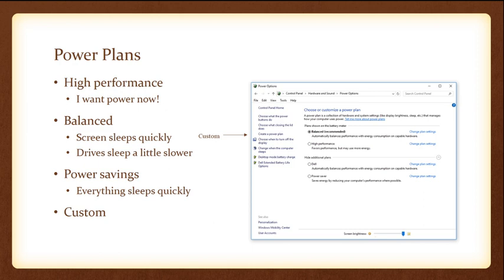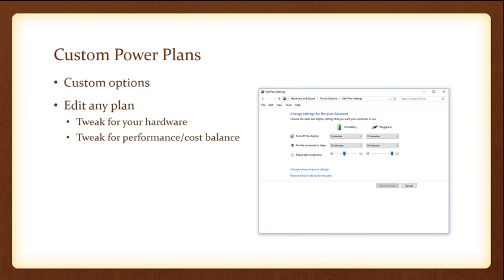Balanced mode also helps your screen sleep quicker. You can find these power plans in your Control Panel under Power Options. You can also create custom power plans, editing any existing plan to tweak it for your hardware and your preferred performance and cost balance. The default settings are a good starting point, but you can always go in and customize them.